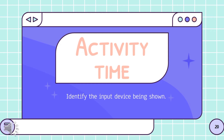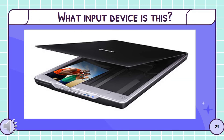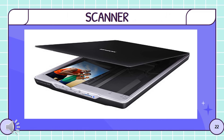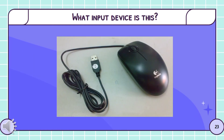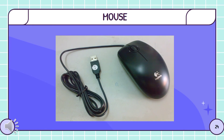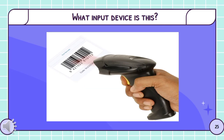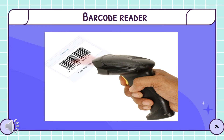And those are the 9 examples of input devices that we can connect to our computers. Now this time, we will do an activity wherein you will identify the input device being shown. Are you ready, Grade 1? Let's go. What input device is this? Please pause the video to answer. Excellent job, Grade 1. This is called a scanner. Next, what input device is this? Please pause the video to answer. You got it right! This is called a mouse. And how about this one? What input device is this? Please pause the video to answer. Impressive! This is called barcode reader.